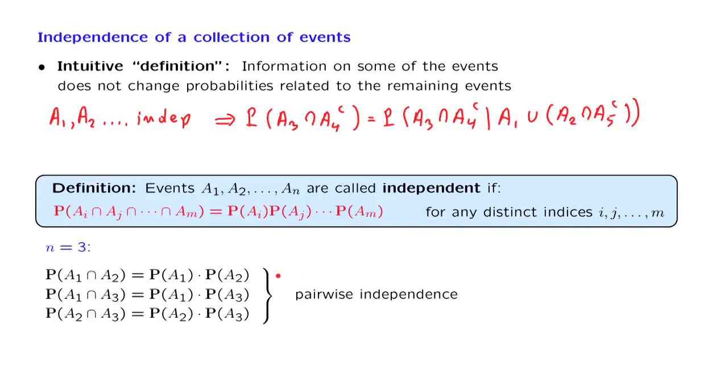What do we have here? This relation tells us that a1 and a2 are independent. This relation tells us that a1 and a3 are independent. This relation tells us that a2 and a3 are independent. We call this situation pairwise independence.